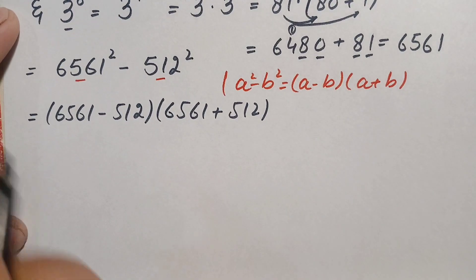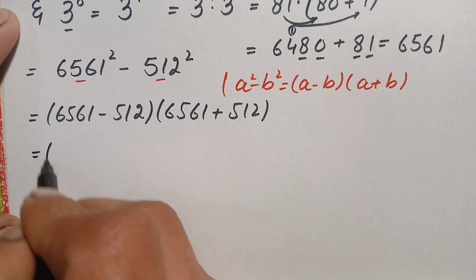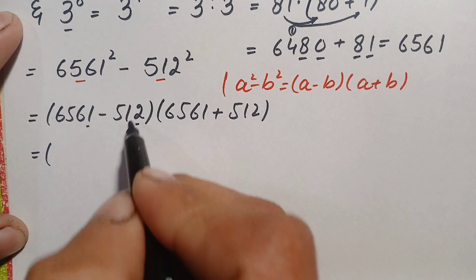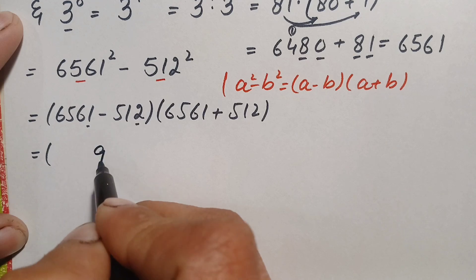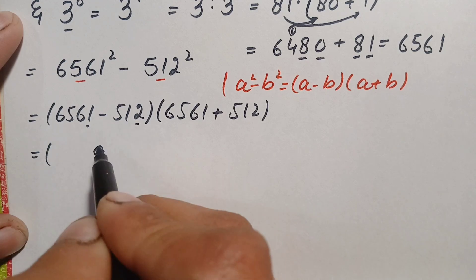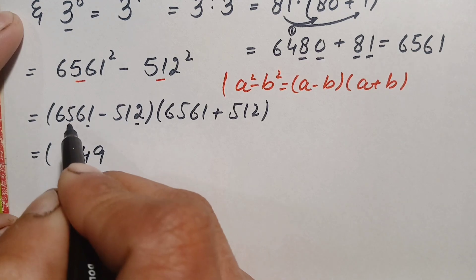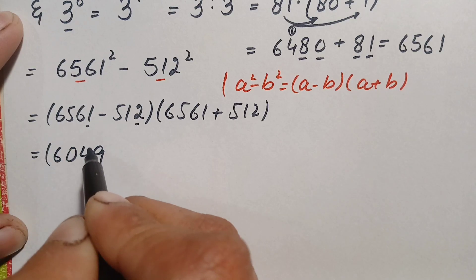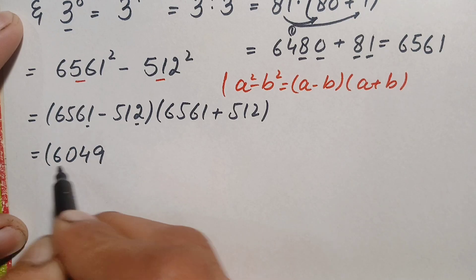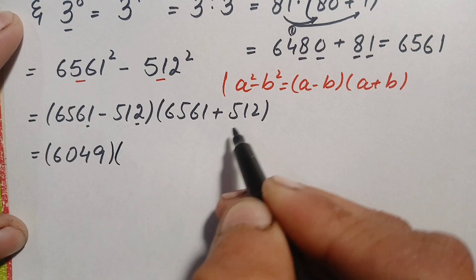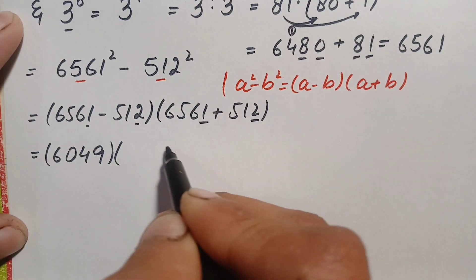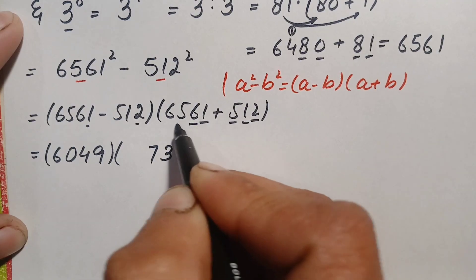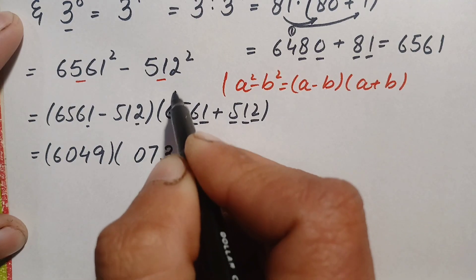Let's subtract and add these two numbers. 6561 minus 512: 1 minus 2 requires borrowing, giving 9... working through the digits gives us 6049. And 6561 plus 512 gives us 7073. So our expression is 6049 times 7073.